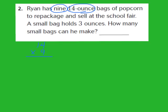Let's work through that multiplication. First, I'm going to multiply 9 times 4, which gives me 36. I'll put the 6 down and regroup the 3. Now I multiply 9 times 1, which is 9, and I add the regrouped 3 to get 12. So I write down 12, and I know I have 126 ounces of popcorn that need to be repackaged.